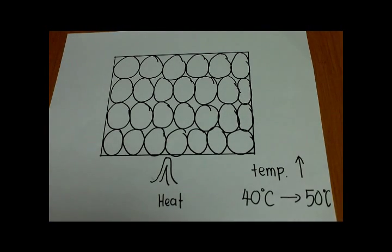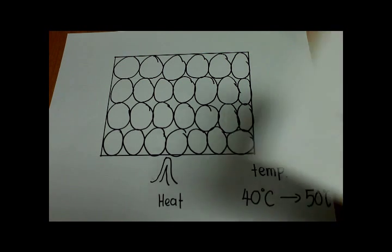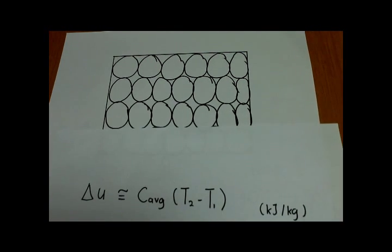Let us look at the example. When we heat up a solid, there is a change in temperature. In this figure, the temperature rises from 40 degrees Celsius to 50 degrees Celsius. We use the formula delta u equal to C average times (T2 minus T1) to get the changes in internal energy.